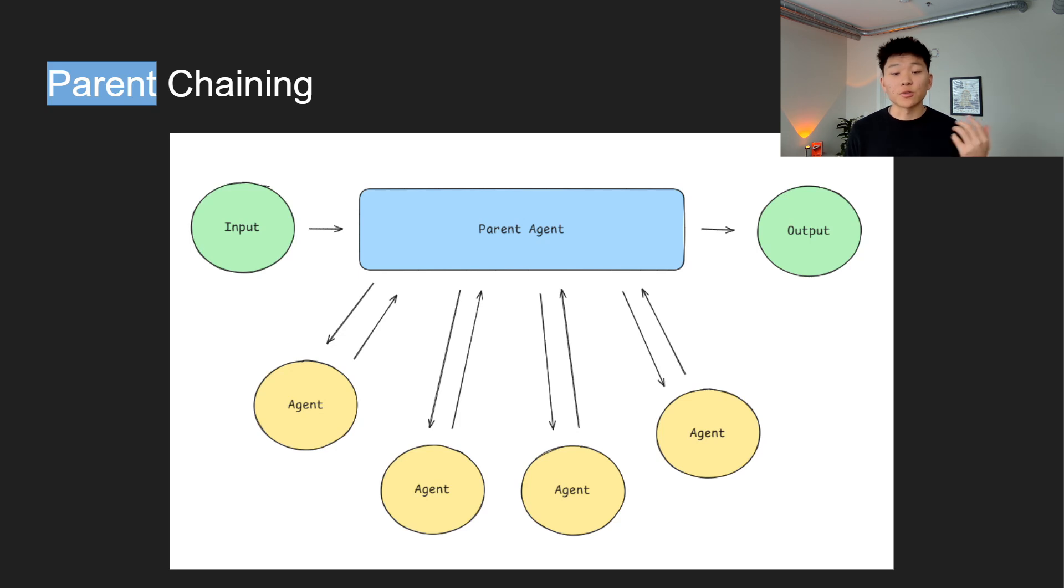So how do you choose between these two systems? It really depends on the workflow. Sequential chaining is best for straightforward processes with a clear order of tasks and parent chaining is ideal for complex or more dynamic scenarios where multiple tasks can run in parallel and where some of the tools are situational. Understanding these methods is crucial for designing effective AI agent workflows. Whether you go with sequential or parent or even a hybrid approach, choosing the right method will determine how well your system performs.